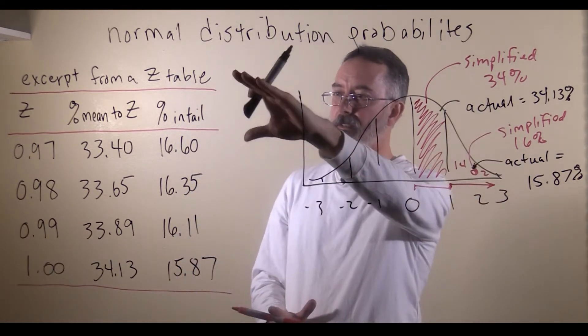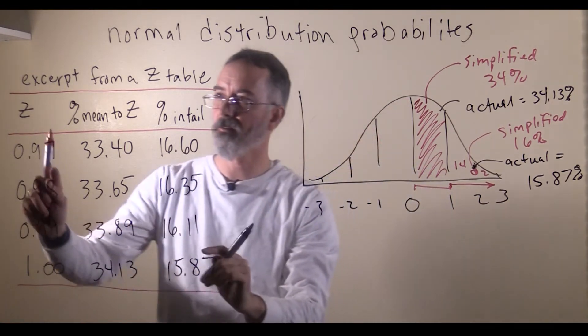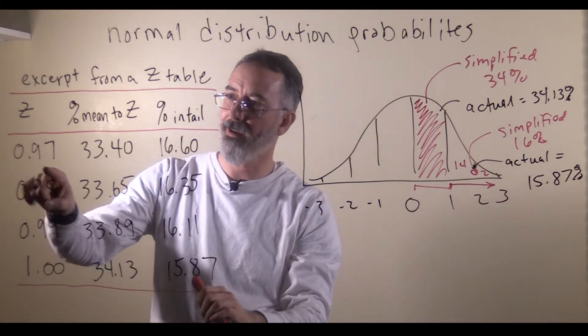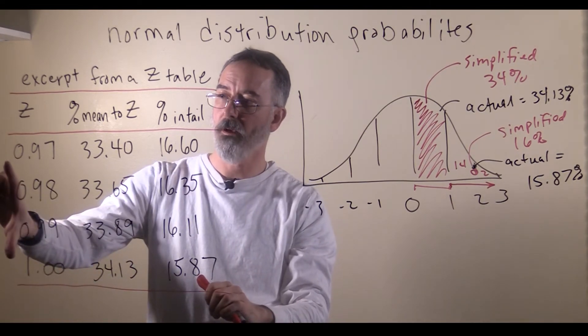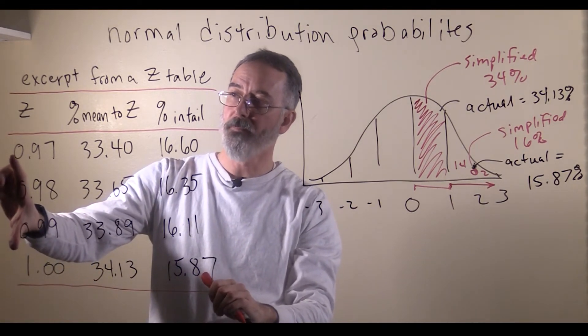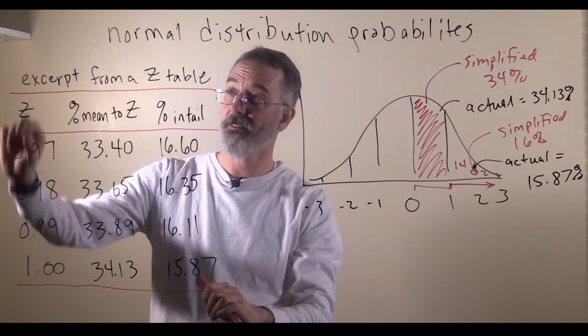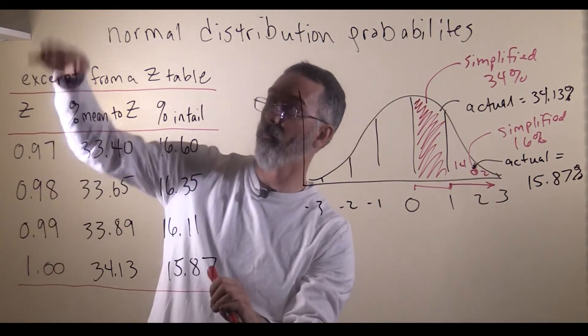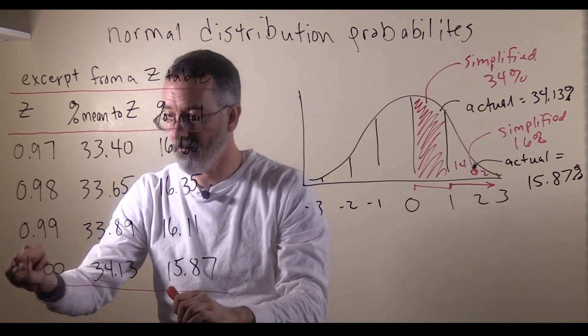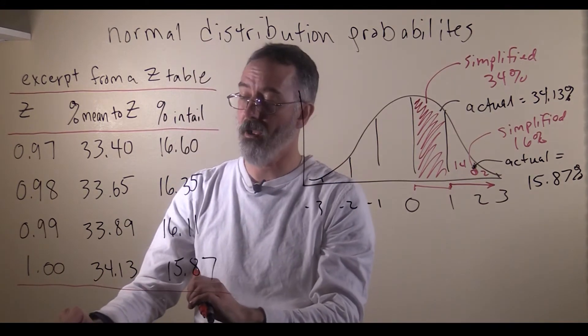I want to point out that this is just an excerpt from the table. This just goes from a z-score of 0.97 to 1. So that is a really small part of the table. Most z-tables go from 0, way up there, down to a z-score of about 3.5 or even 4.